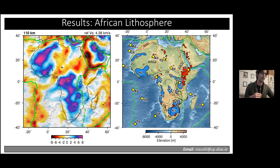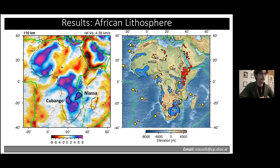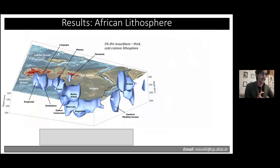Moving further, we imaged two completely unexposed cratons — one named the Cubango craton, and another evidenced as the Niassa craton in western Malawi. In Tanzania, where we have large extents of actual shields on the surface, we find only a very small cratonic lithospheric core. Overall, our view of the lithosphere beneath Africa is much more complex and fragmented than previously proposed.